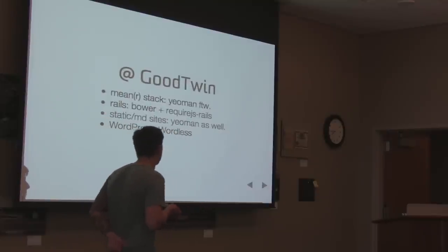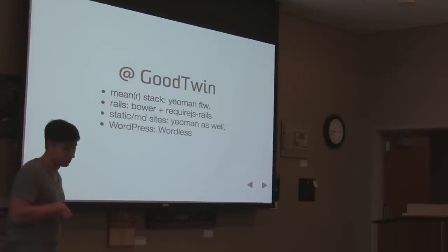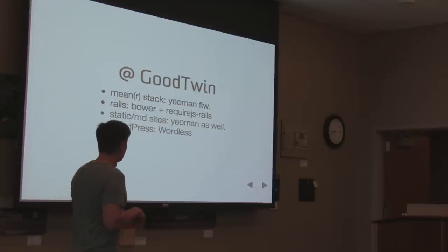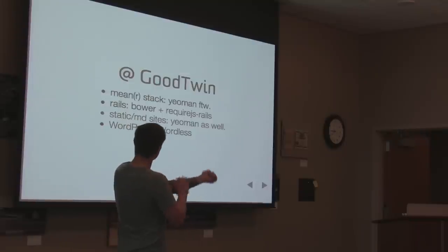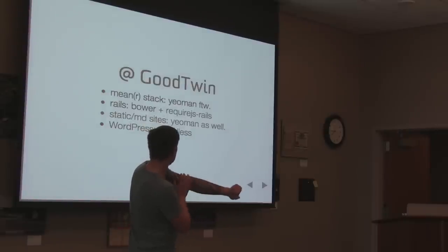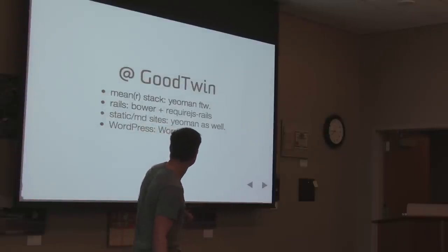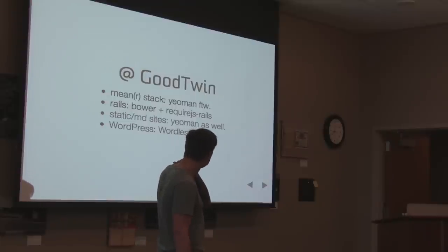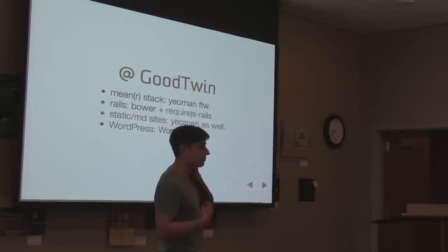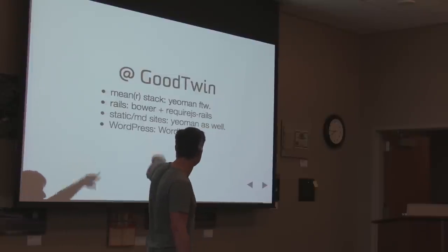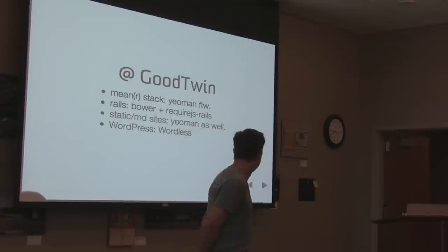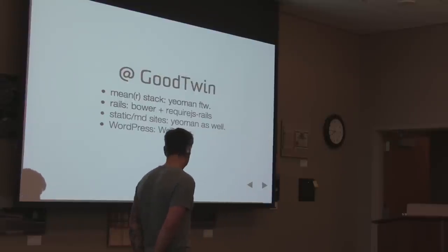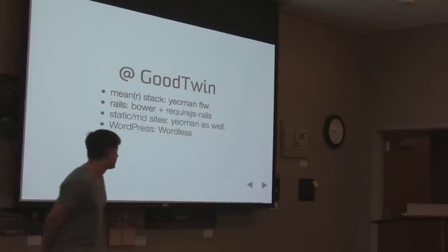I wanted to finish off briefly by giving a real sense of where we're using this tool today. On what I'm coining the MEANER stack — an all-JavaScript stack — that's MongoDB, Node.js, and Express.js on the back end, with Angular and Require.js on the front end. We're building a lot of these projects. A lot of our rapid projects that are two or three days long are built on that stack, and we use Yeoman today fully to do that. For Rails, we use the Bower piece and Require.js. Anything static, we use Yeoman as well.